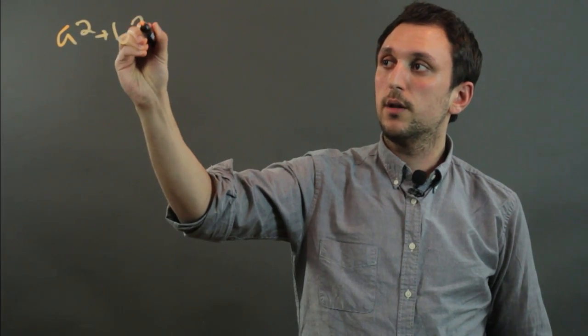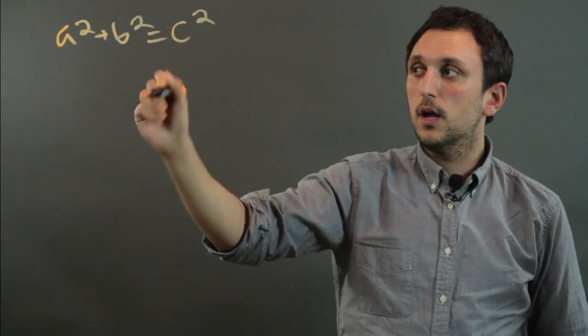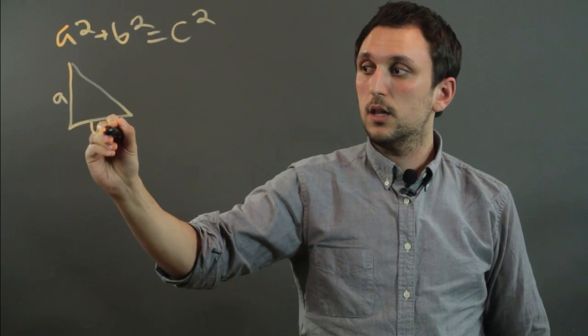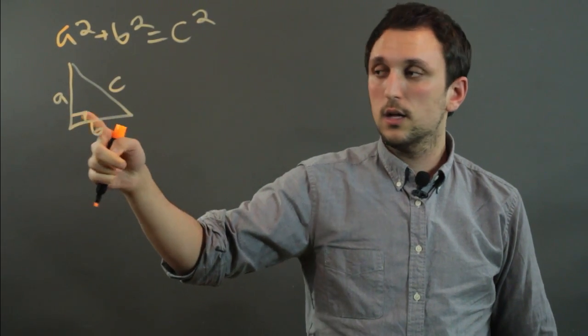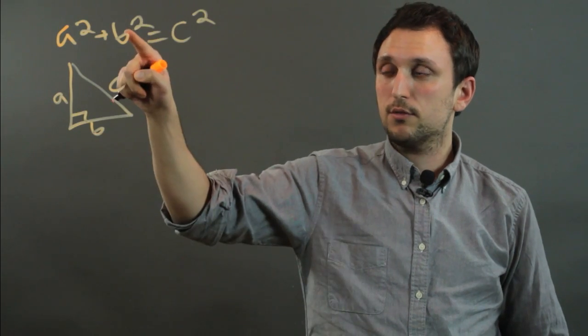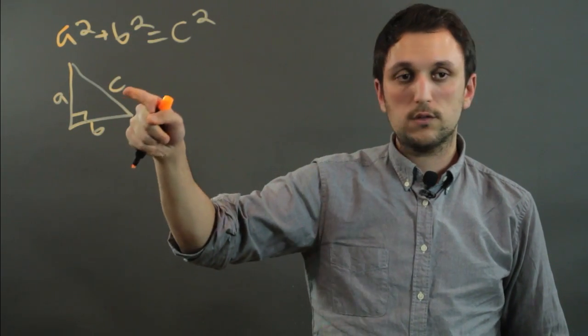First, the Pythagorean Theorem, and that is A squared plus B squared equals C squared. This is true for any right triangle with leg A, leg B, and hypotenuse C, where the length of A squared plus the length of B squared equals the hypotenuse, or C, squared.